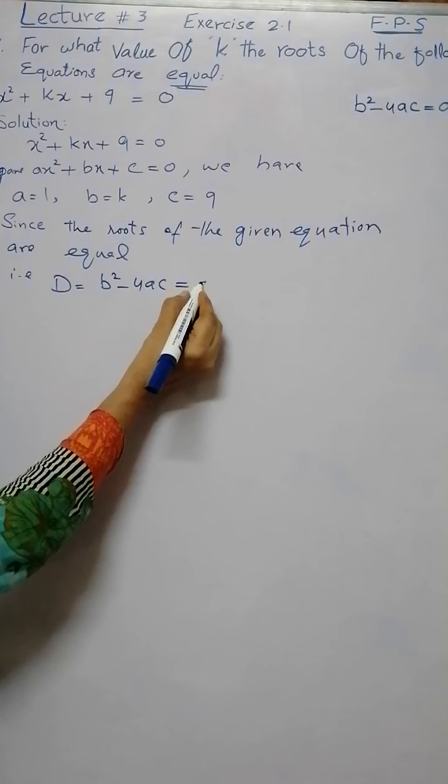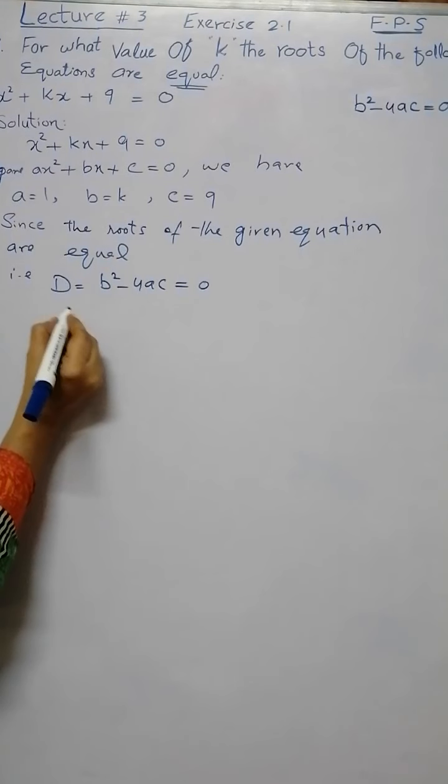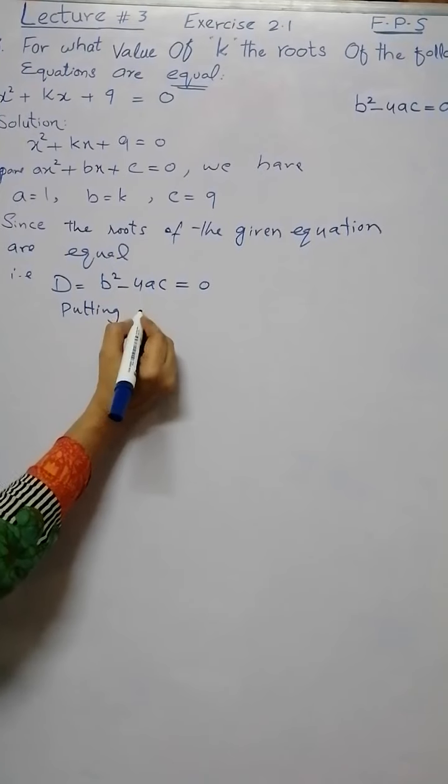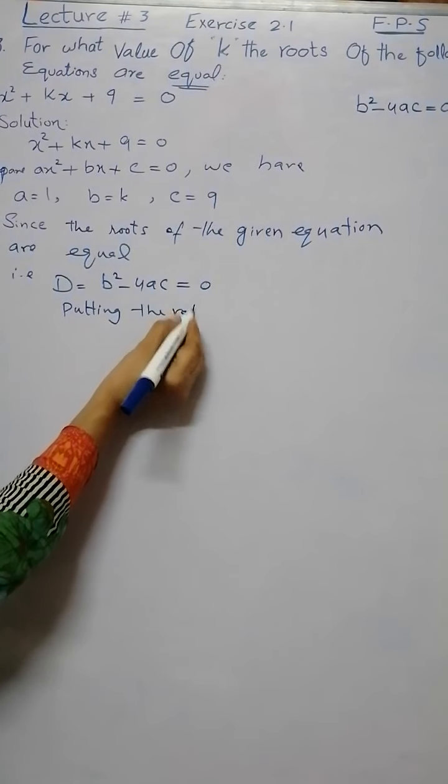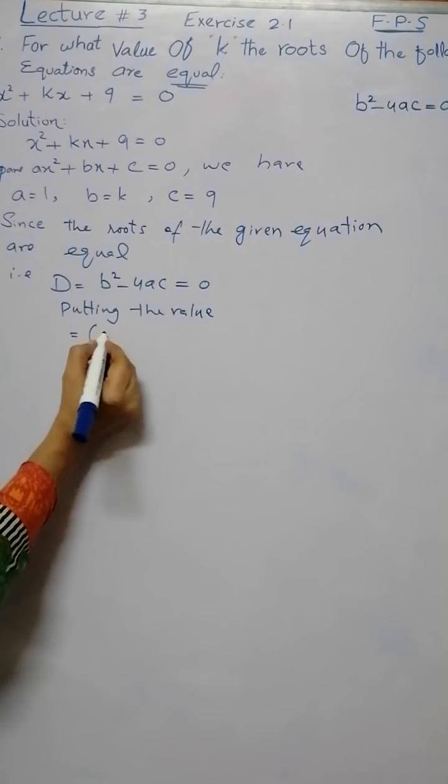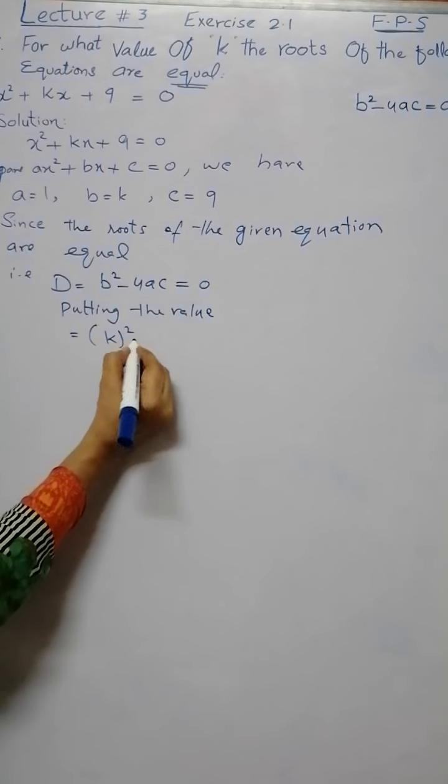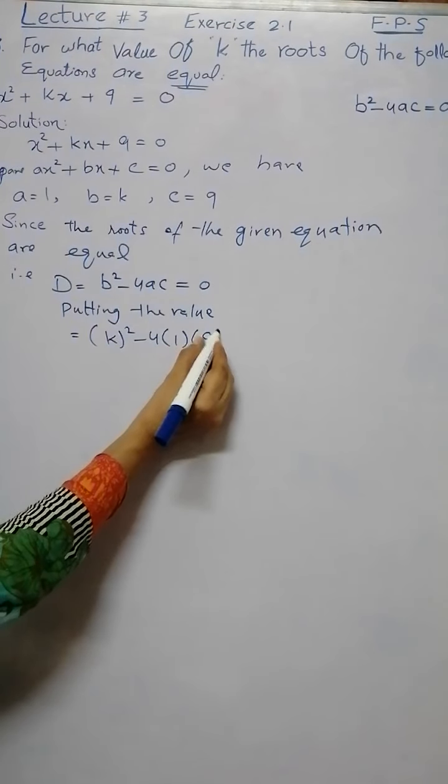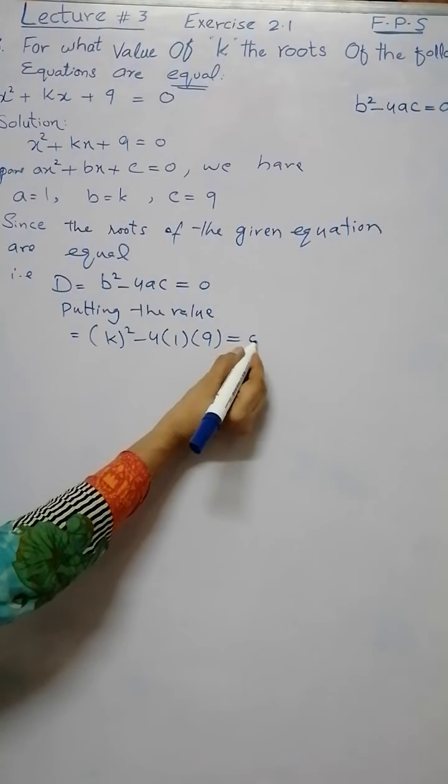...b² - 4ac = 0. Now by putting the values of a, b, and c here, the value of b is k, a is 1, while c is 9, into the discriminant formula: k² - 4(1)(9) = 0.